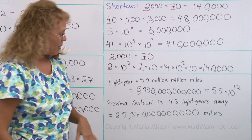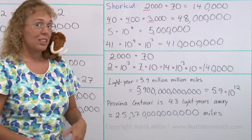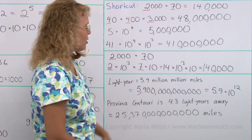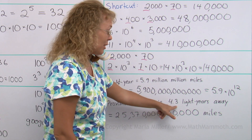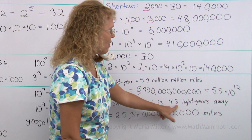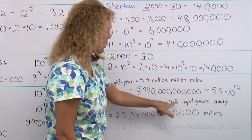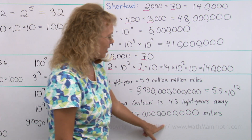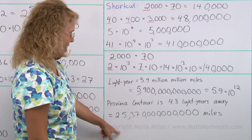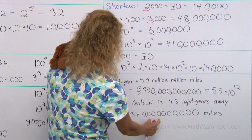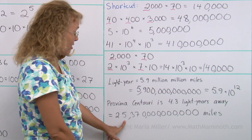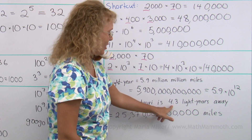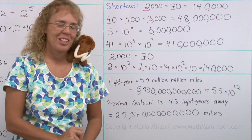Here's another big number. Proxima Centauri is the star closest to us, and it is 4.3 light years away. If we calculate that in miles by multiplying 4.3 by our light year number, we get a really big number with tons of zeros. Reading it out: ones, thousands, millions, billions, trillions — it's 25 trillion, 370 billion miles. But it is much shorter to write it as 4.3 light years. And we're all done with this lesson.